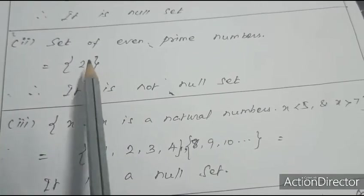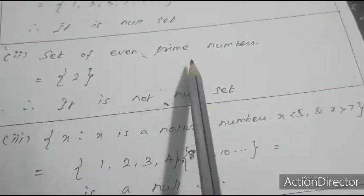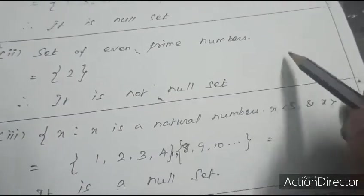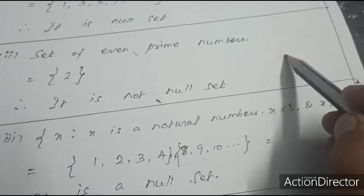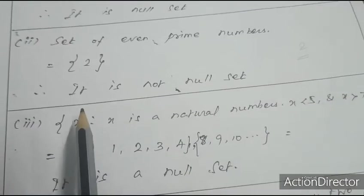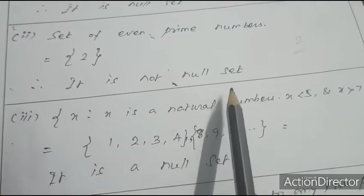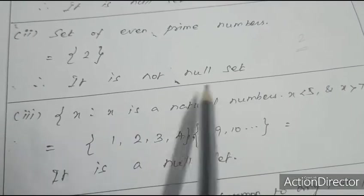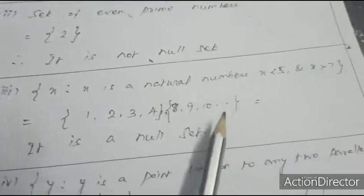Second question: the set of even prime numbers. 2 is the only even prime number. Therefore it is not a null set.